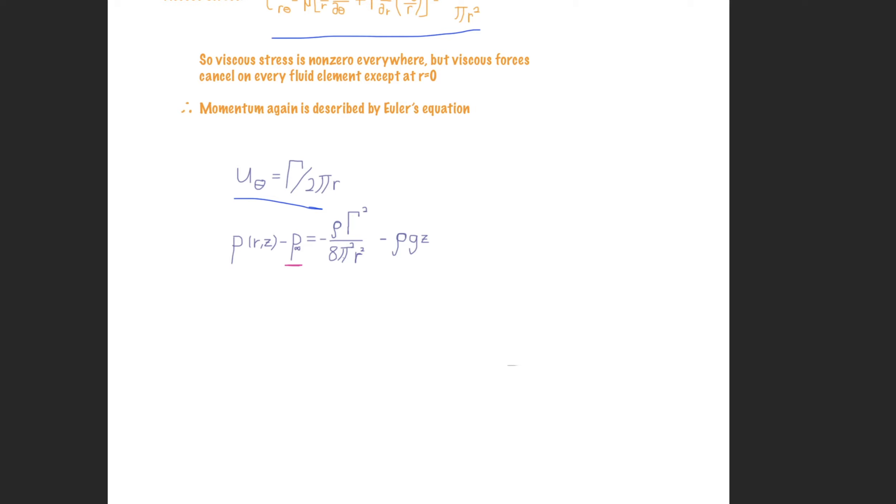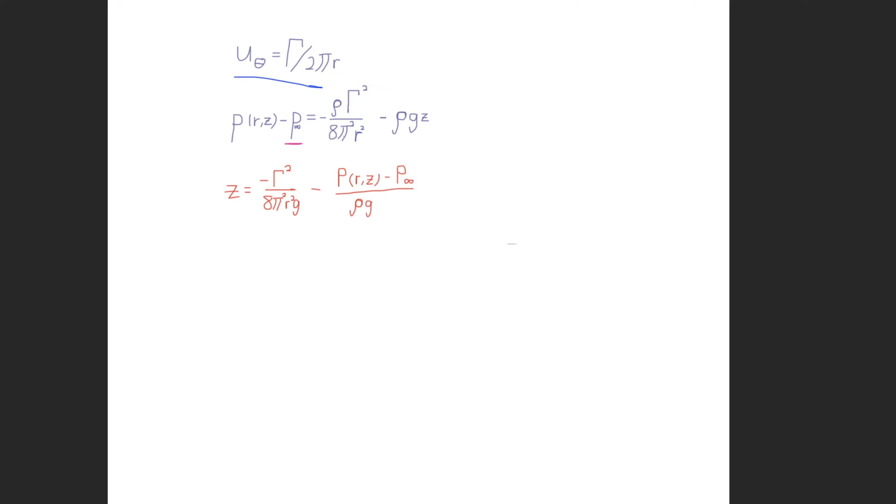And so what we end up with is p as a function of r and z minus p infinity is equivalent to negative rho, which is the density, times the circulation squared over 8 pi squared r squared minus rho g z, right? And now again, just like before, if we solve for z, then we end up with this equation right here.